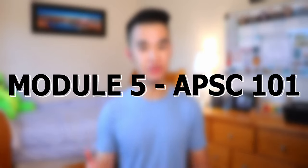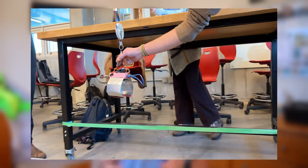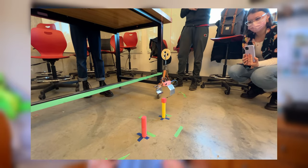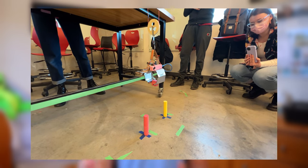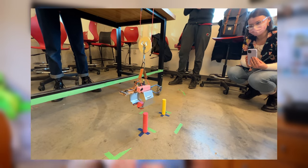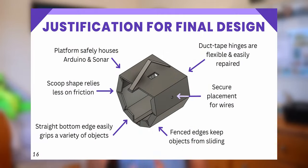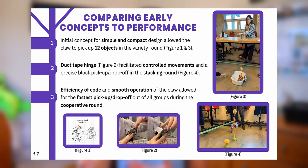AppSci 101 begins with module five, which focuses on building technical design skills in the form of building a fully autonomous claw that can pick up a variety of objects. You'll be given an Arduino kit, sheet metal, and access to hand tools during your studio sessions to construct and program your autonomous claw. Once your claw has been built, it will be assessed based on the variety of objects it can pick up and its precision in picking up and dropping off objects. To present your claw design, you'll be making an e-poster to document your design process, which will basically be an automated slideshow presentation.